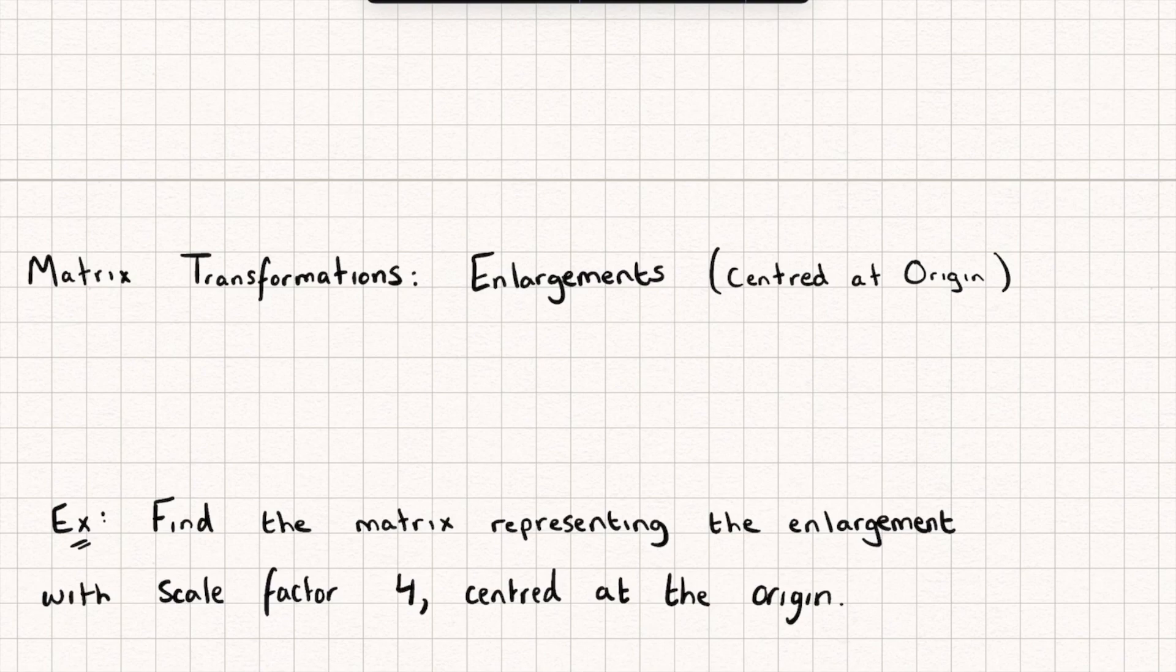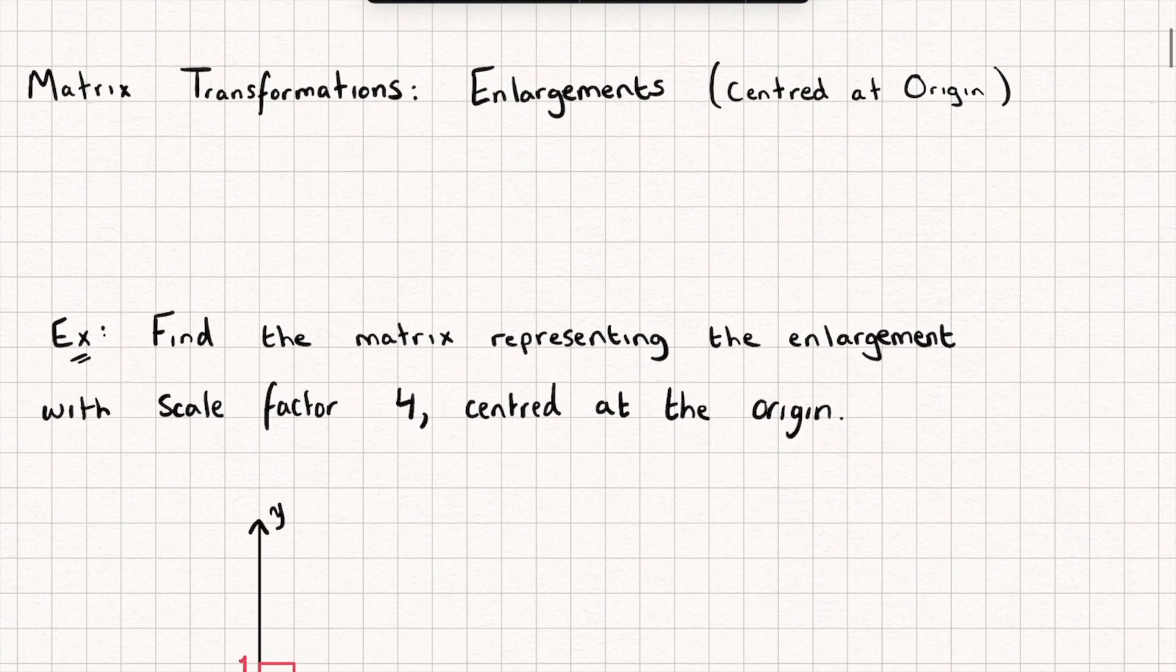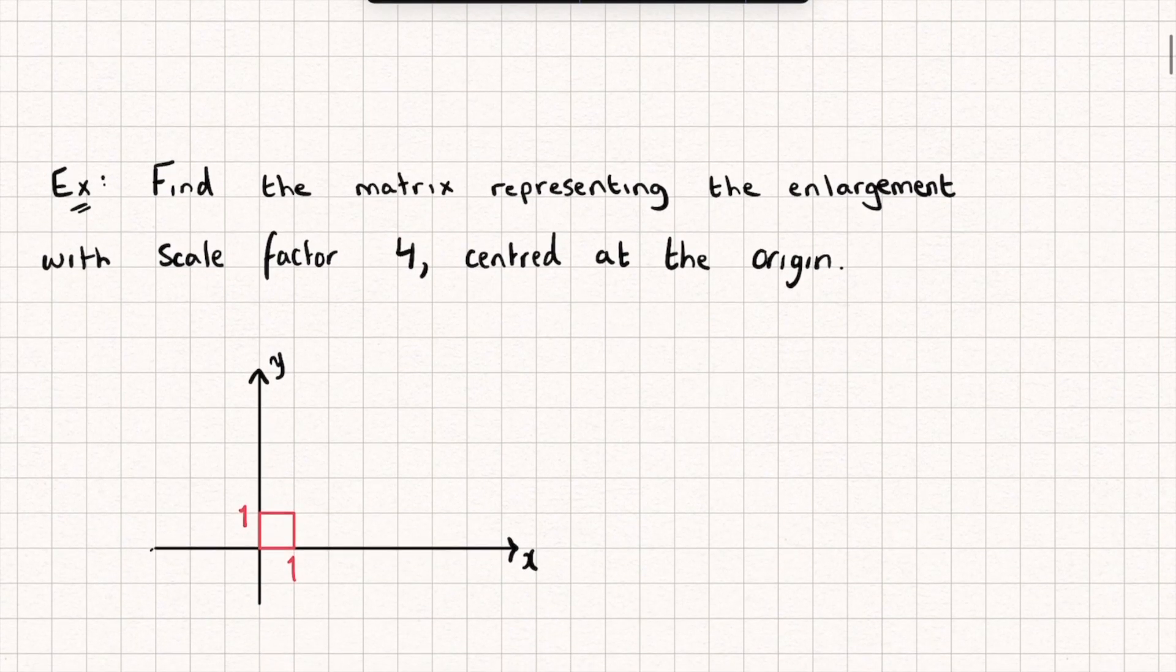Okay, so let's look at this first example. We need to find the matrix that represents an enlargement with a scale factor of four centered at the origin. You can see here I've drawn a unit square because I really want to emphasize how this works.